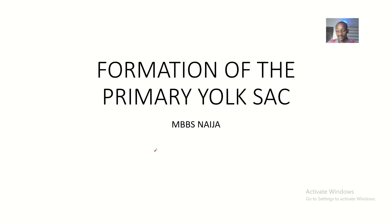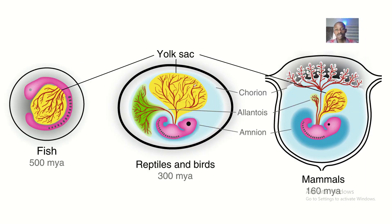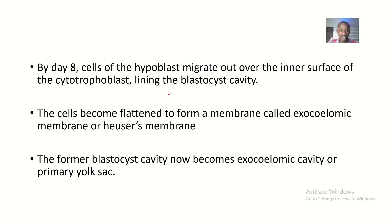Then how about the primary yolk sac? We're supposed to talk about the primary yolk sac before the secondary yolk sac — I just skipped that. So this is the formation of the primary yolk sac. It is called a primary yolk sac because it looks yellow, which means it contains yolk. So the formation of this primary yolk sac is what we'll be talking about in this video.